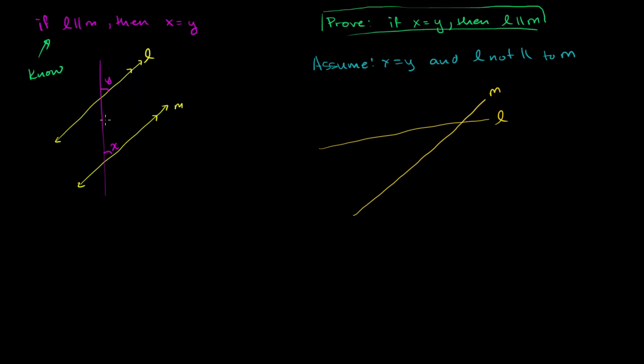And then this thing that was a transversal, I'll just draw it over here. And then this is X. This is Y. And we're assuming that Y is equal to X. So we could also call the measure of that angle X.